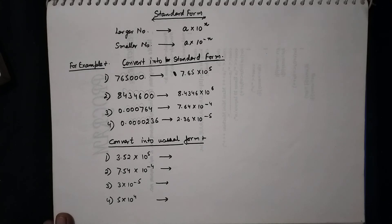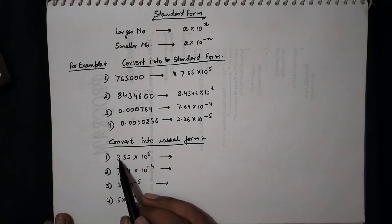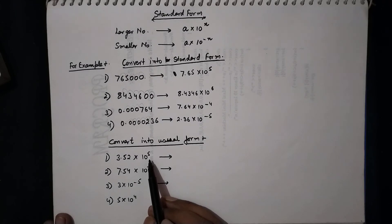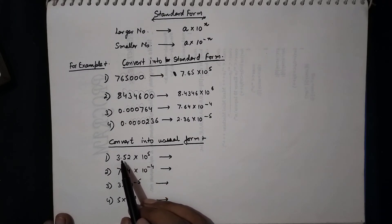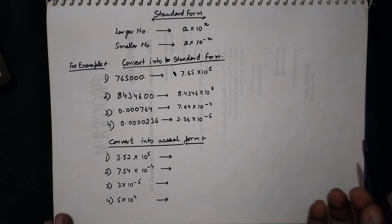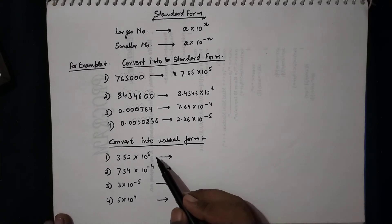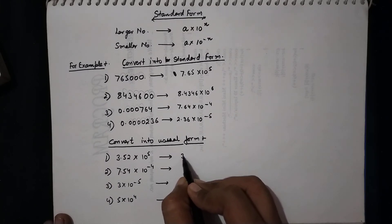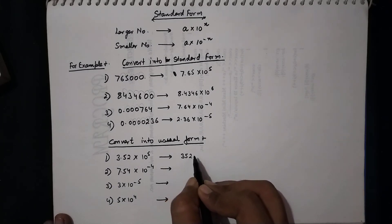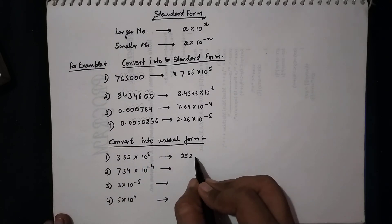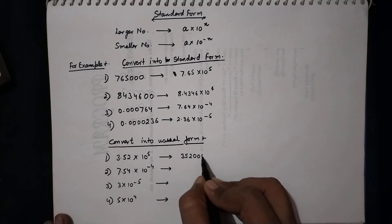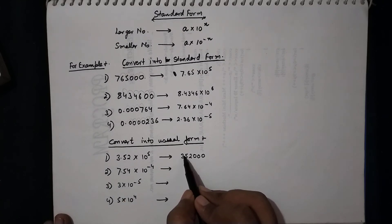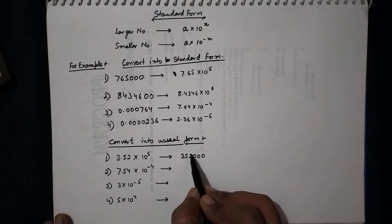Now let's convert some numbers back to their usual form. For 3.52 × 10^5, since the power is positive it is a large number, so we shift the decimal to the right 5 places: 1 and 2 digits are already there, and the remaining 3 places are filled with zeros, giving 352000.